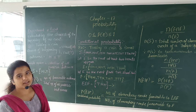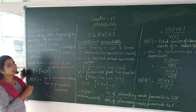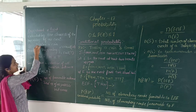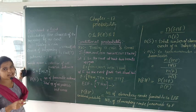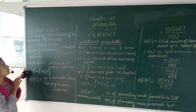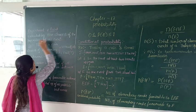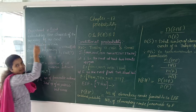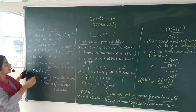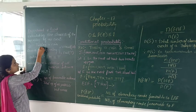Before going to the chapter, let's have a brief explanation of the basic concepts of probability. Let's come to the experiment or a trial. Tossing a coin is an example. So what is an experiment or trial? The definition of experiment or trial is calculating the chances of the happening of an event.